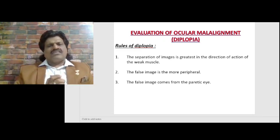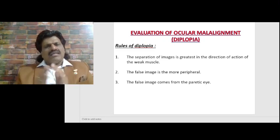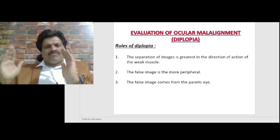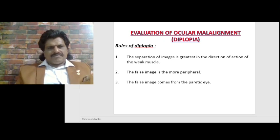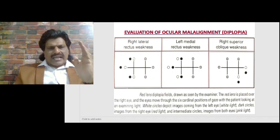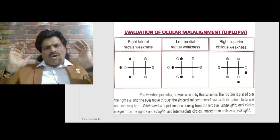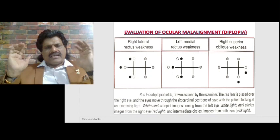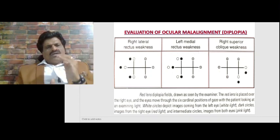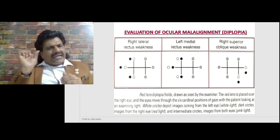To summarize, the three important rules of diplopia: one, the separation of images is greatest in the direction of action of the weak muscle; two, the false image is the more peripheral image; three, the false image comes from the parafovea. Now let's evaluate right lateral rectus palsy, left medial rectus palsy, and right superior oblique weakness using these rules.